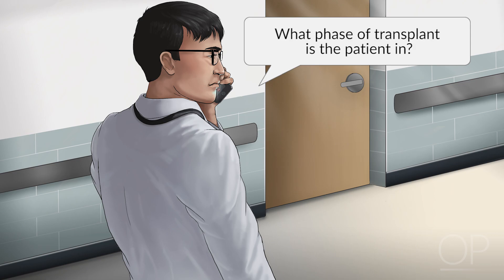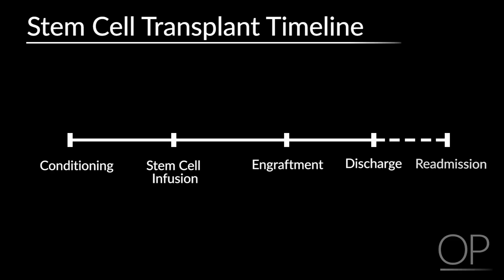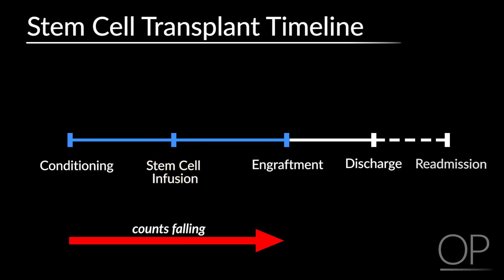Questions to ask on the phone or to look up: What phase of transplant is the patient in? Is the patient undergoing conditioning, receiving high-dose chemotherapy or immunosuppression? Has the patient received the stem cell infusion today? Are the patient's counts falling, or is the patient awaiting engraftment? Has the patient experienced acute toxicities and is recovering, approaching discharge? Or is this a patient readmitted for infection, graft-versus-host disease, or dehydration? Knowing the transplant phase can help you understand why hyponatremia is occurring.